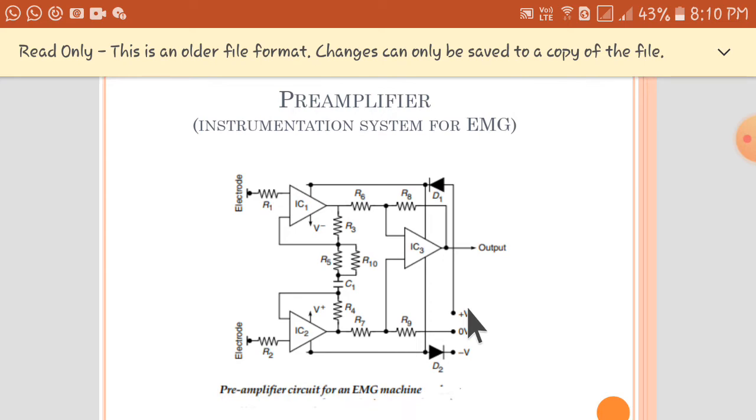Next is the pre-amplifier stage. This stage is similar to that of an instrumentation amplifier which we have already discussed. At the input set, there are two ICs, IC1 and IC2. Here there are the electrodes, two electrodes.